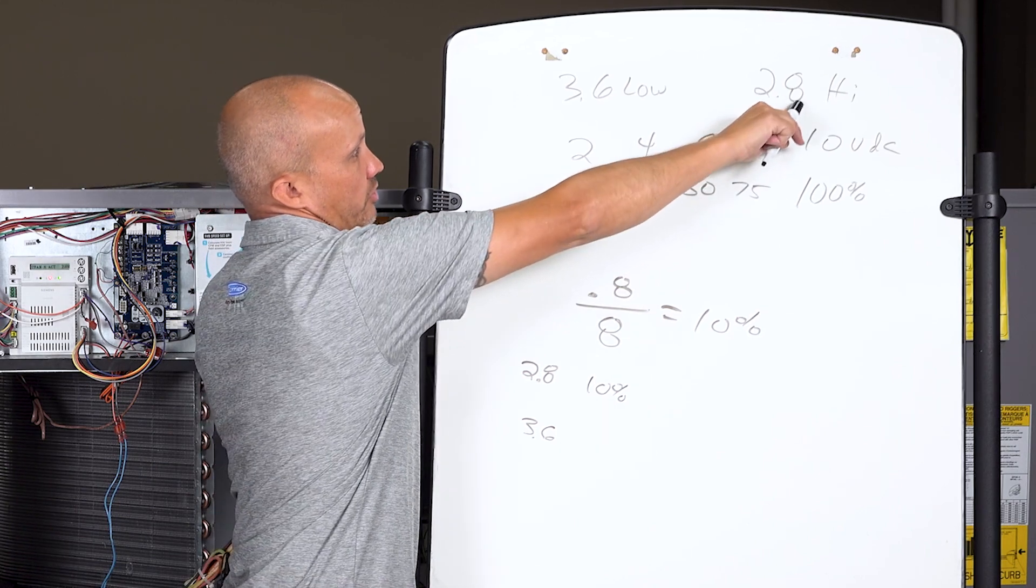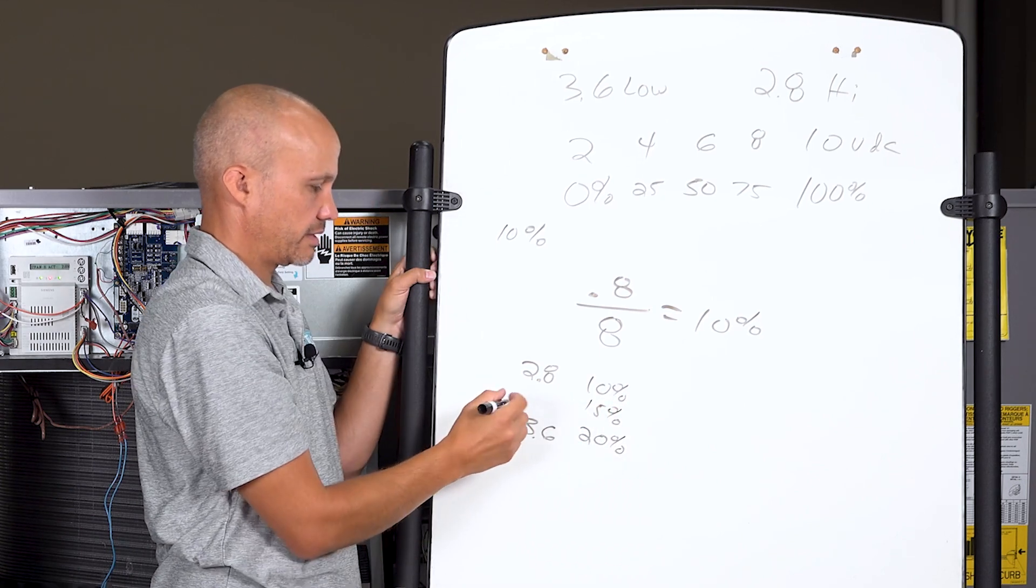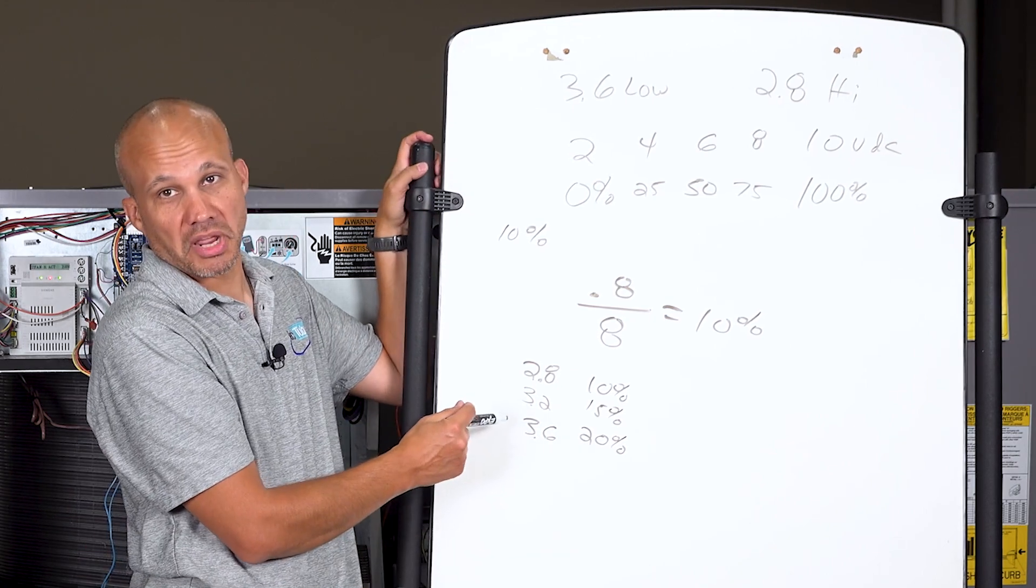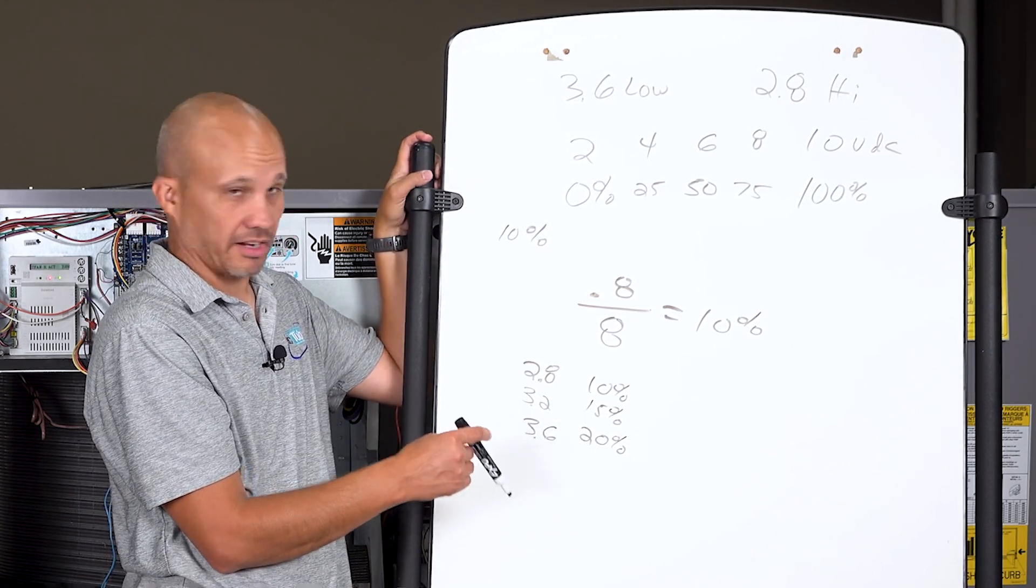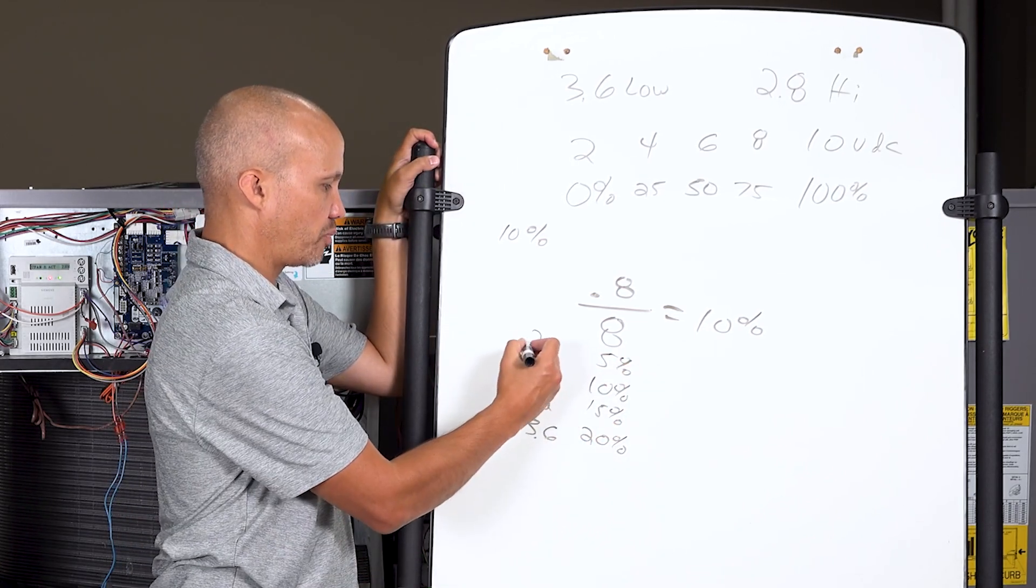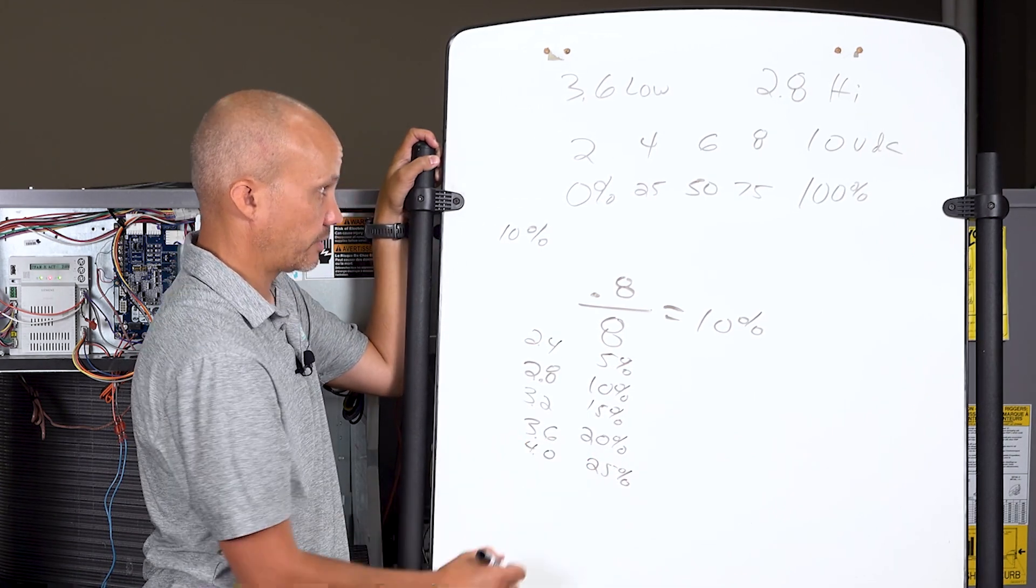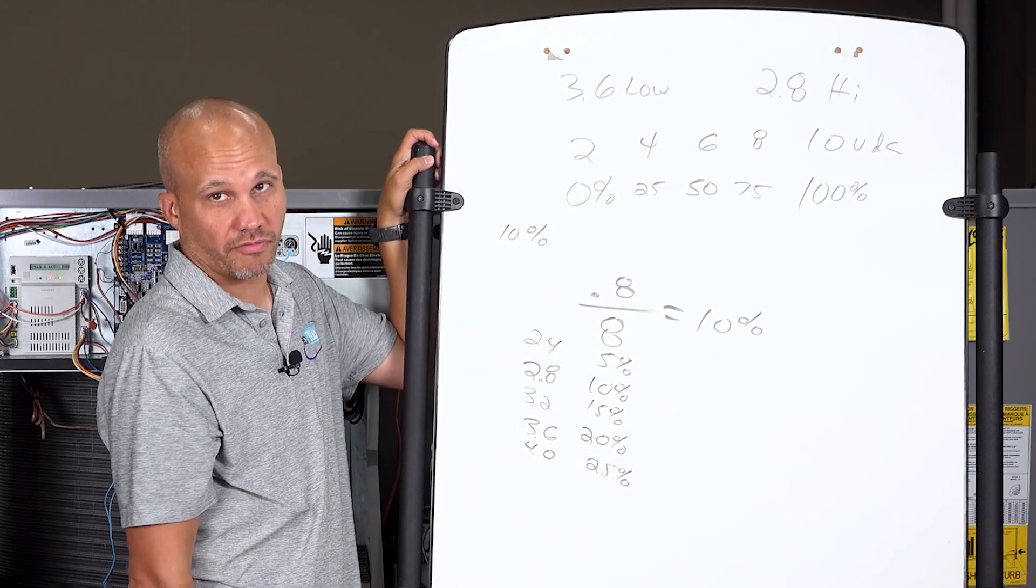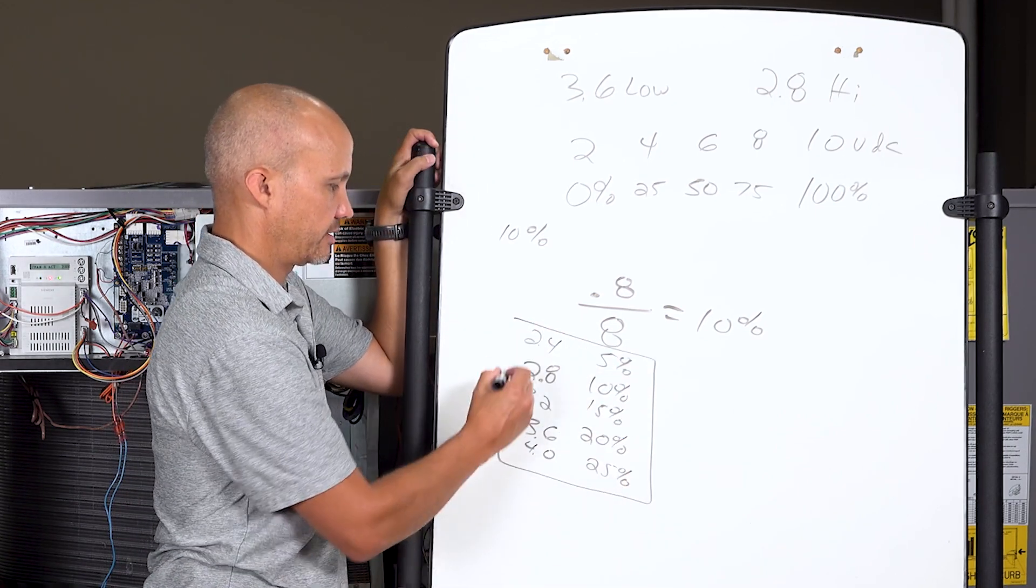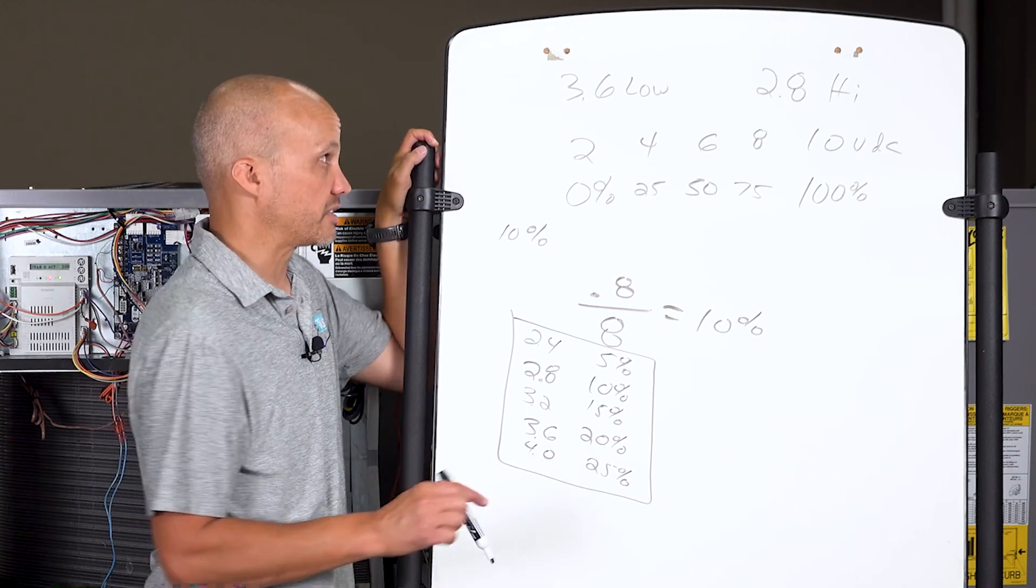If I wanted 15 percent, that would be 3.2 volts. Instead of doing this math all the time, you may want to just make a chart like this once and never think about the math again. 5 percent would be 2.4 volts, 25 percent would be 4.0 volts. You probably should never have more than 25 percent on a rooftop economizer anyway. If you take a picture of that and save it, you don't have to really do this math ever again.